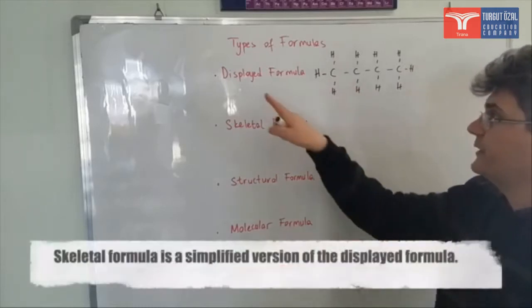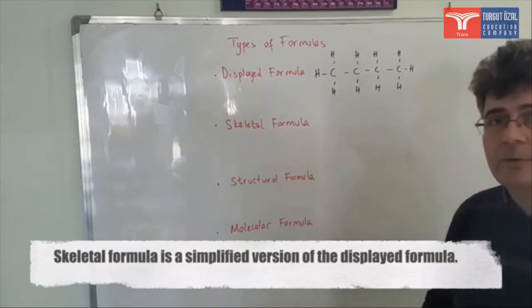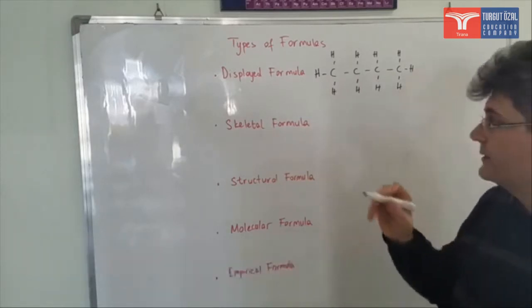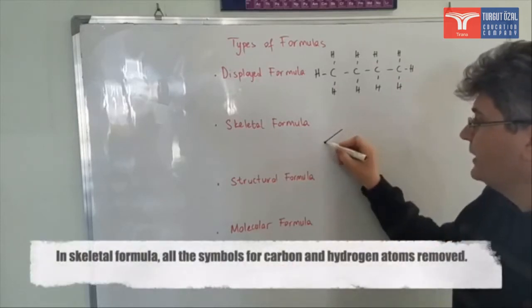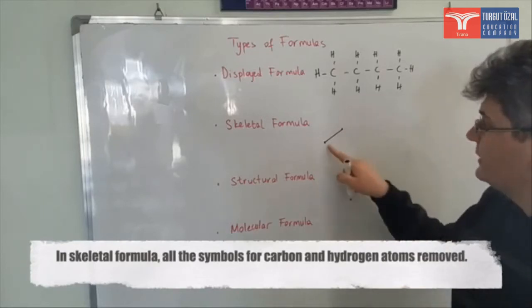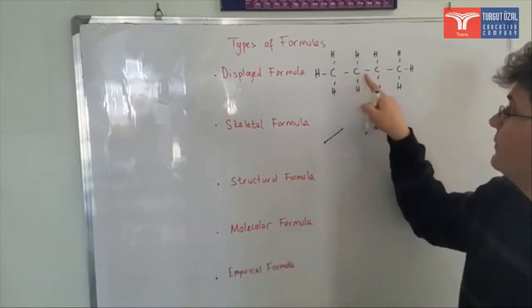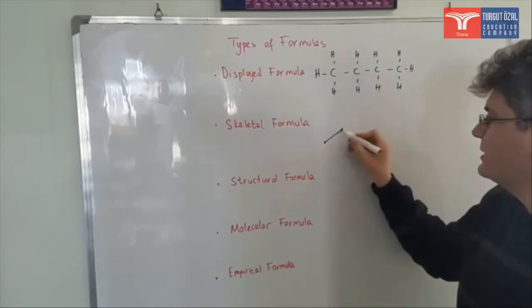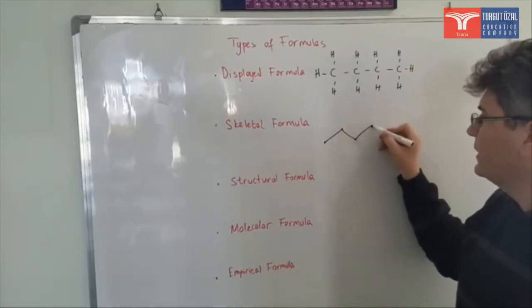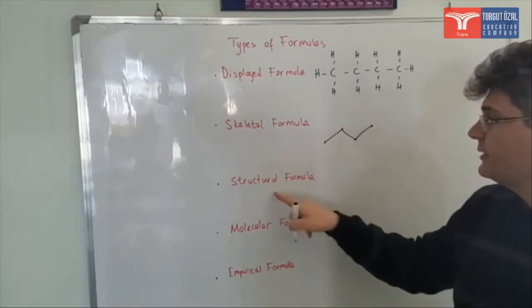A simplified version of displayed formula is called skeletal formula. In the skeletal formula we are only using some lines. In one line, each beginning and ending is representing one carbon atom. So, this is representing two carbon atoms actually. However, we have one, two, three, four carbon atoms. So I need one more line. It's three carbon atoms now. I need one more. Now it has four carbon atoms.